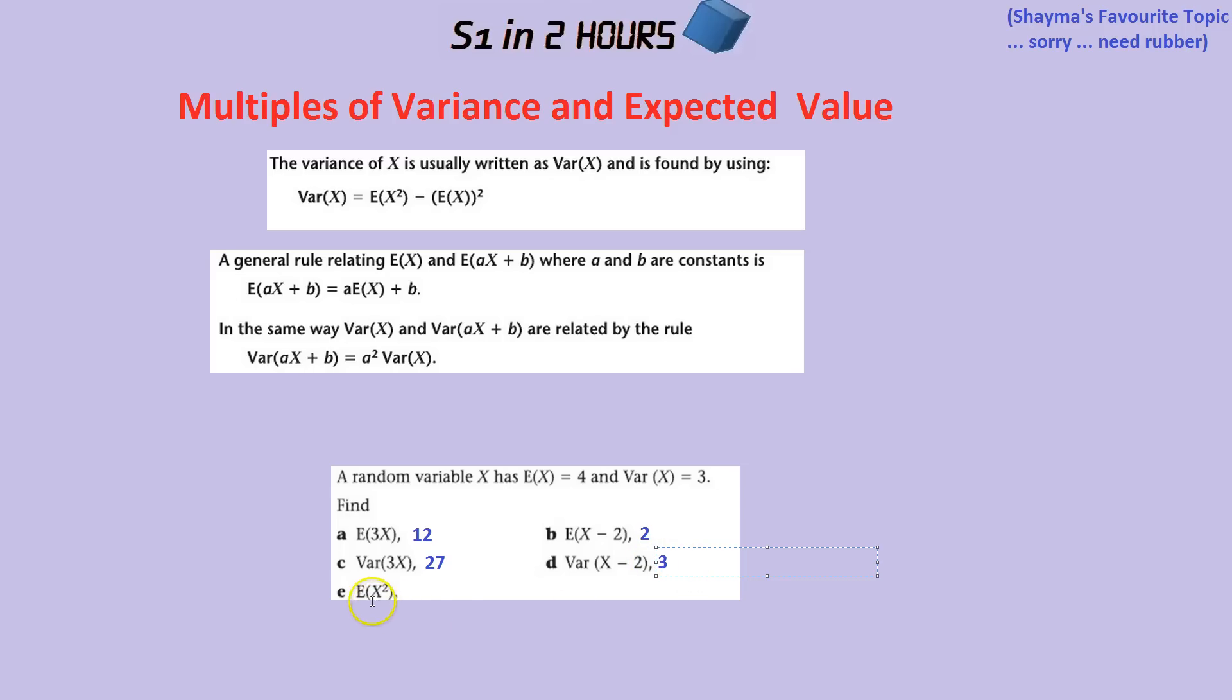Now the interesting thing about this that they're testing is whether you remember the formula for variance, which if you don't is up here. The variance, which we know from this question is 3, is equal to E of X squared, which is what they want for question E. E of X squared minus E of X squared, which is different. It's very important the difference between those two things.